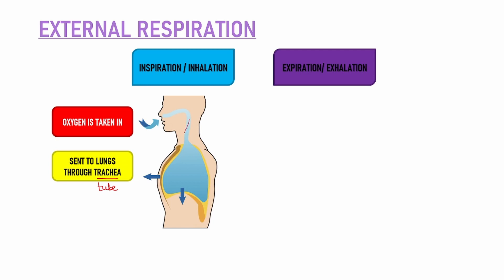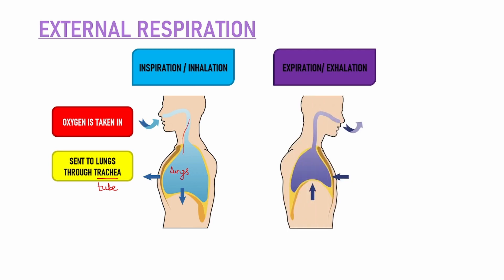Toh trachea jo throat mein tube-like structure hoota hai, usse hum kehte hai trachea. So oxygen jo hum nose se breathe in karte hai, woh through trachea towards our lungs pahunchta hai. Now what do you mean by expiration? Expiration — hum carbon dioxide ko release karte hai. Oxygen ko inhale kar rahe hai and carbon dioxide ko release kar rahe hai. That process is called exhalation. Carbon dioxide is one of the waste products produced, usse body se bahar nikaalna zaroori hai — that is done by the process of exhalation.